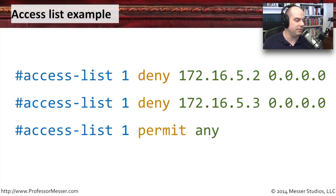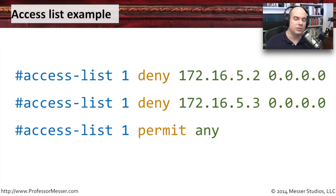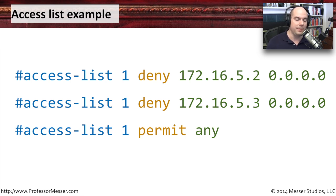Here's access list 1 — all of this is a member of the first access list in the firewall. Here's a deny access control that says if you are on 172.16.5.2 with this mask, meaning that specific IP address, we're going to deny any traffic from that IP address. Here's another one: we're going to deny 172.16.5.3. So the first two rules in this access control list are denying traffic to individual IP addresses.